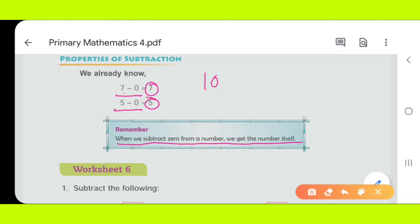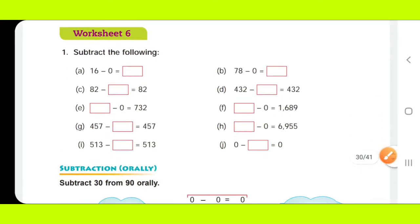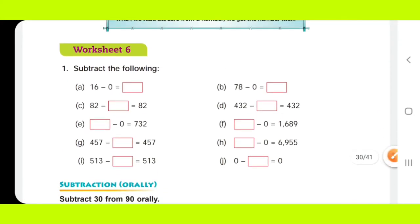Suppose you subtract 0 from 100, what you will get? You will get 100. If we subtract 0 from 999, the same number you will get. Okay, so this is the property and by using this property, we will solve worksheet number 6 of unit 2.